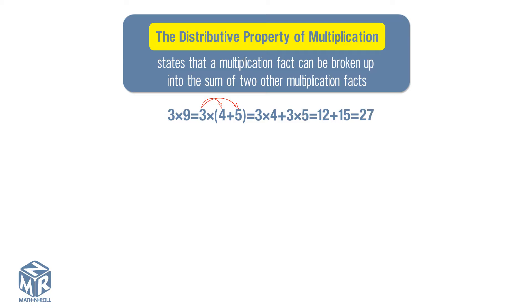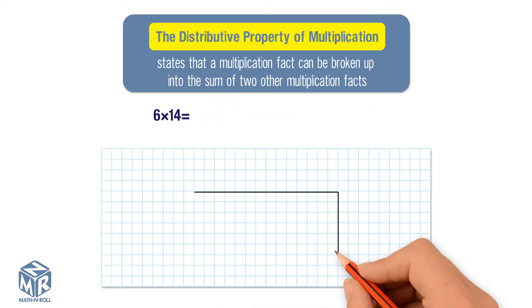You can also use the distributive property to multiply a one-digit number by a two-digit number. Let's try an example. 6 times 14. Draw a 6 by 14 rectangle on grid paper.